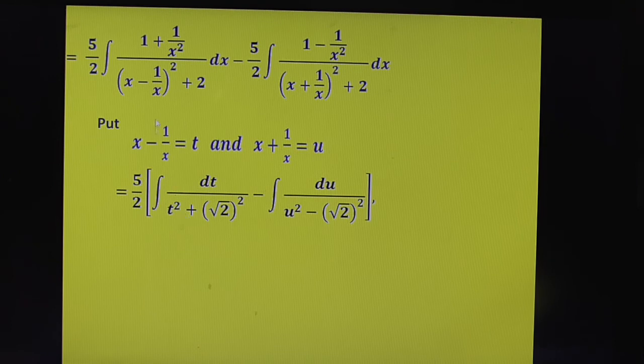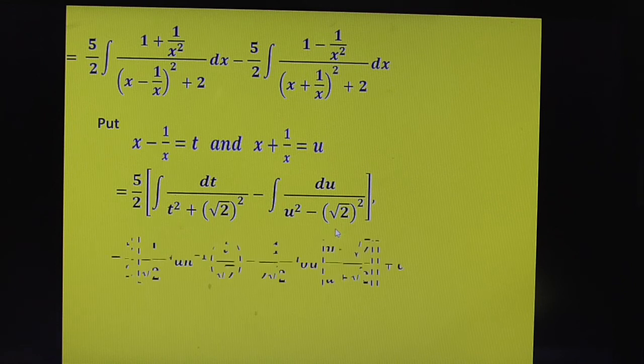In place of x minus 1 by x, substitute t. After differentiation, you get this whole thing as dt. This 2 I am writing as root 2 square. Why? I am converting this into standard form. We have integral 1 by x square plus a square as well as integral 1 by x square minus a square. Substitute those formulas.